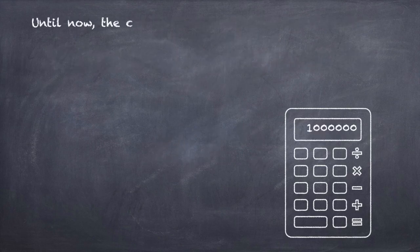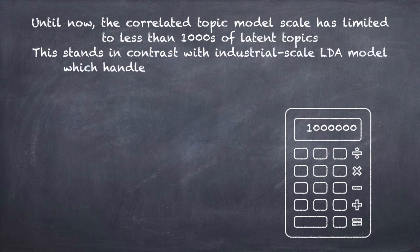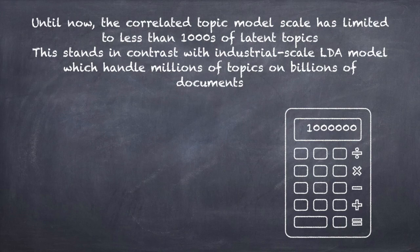Until now, the correlated topic model scale has limited to less than 1,000 of latent topics. This stands in contrast with the industrial-scale LDA model, which handles millions of topics on billions of documents.